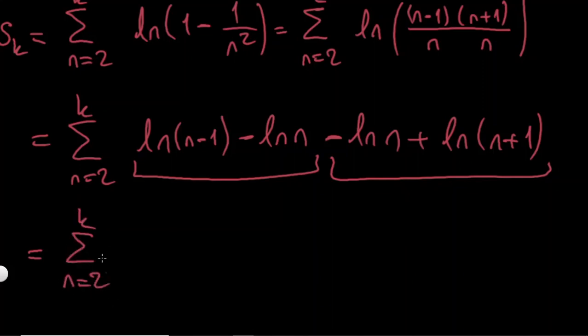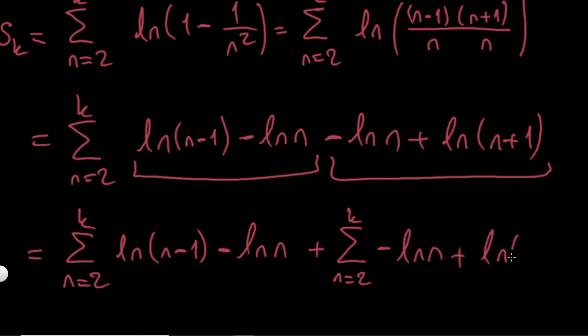I have n from 2 to k, ln n minus 1 minus ln n. And plus, n goes from 2 to k, minus ln n plus ln n plus 1.